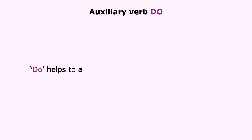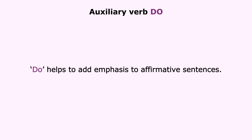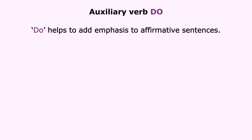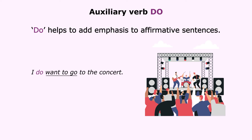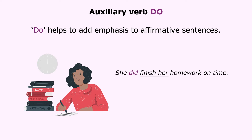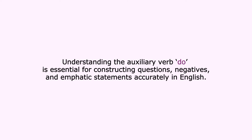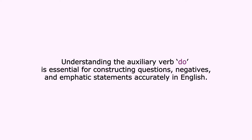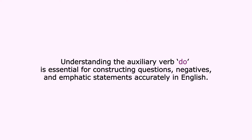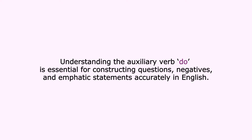Do helps to add emphasis to affirmative sentences. For example: 'I do want to go to the concert' (present simple); 'She did finish her homework on time' (past simple). Understanding the auxiliary verb Do is essential for constructing questions, negatives and emphatic statements accurately in English.